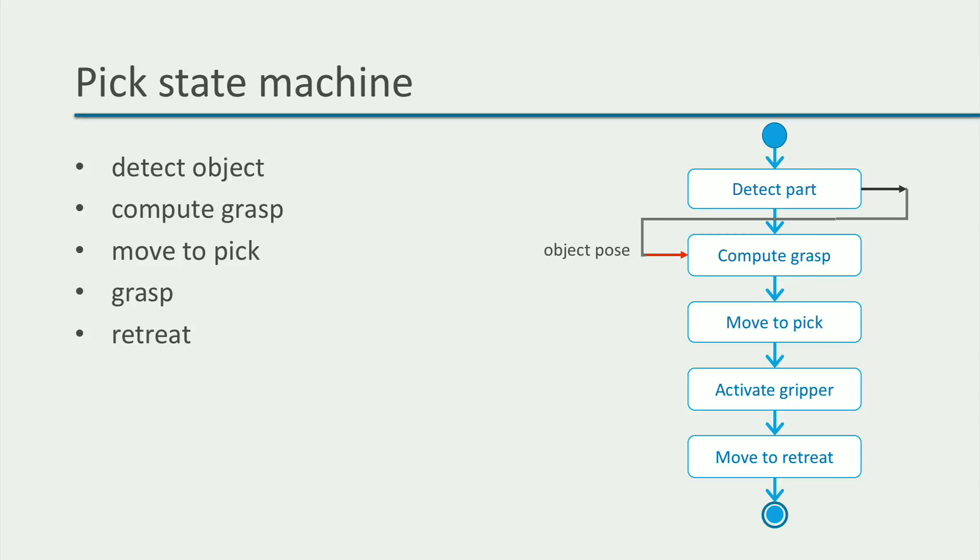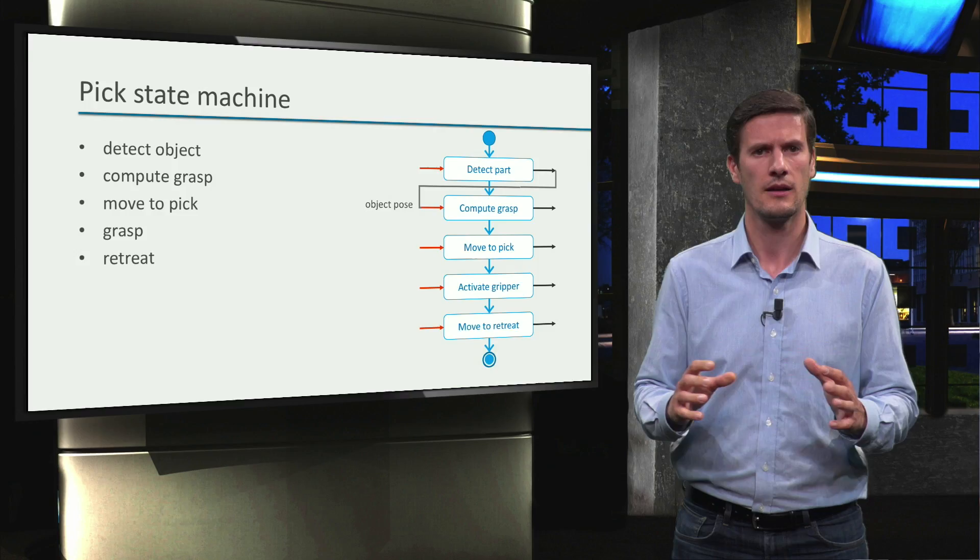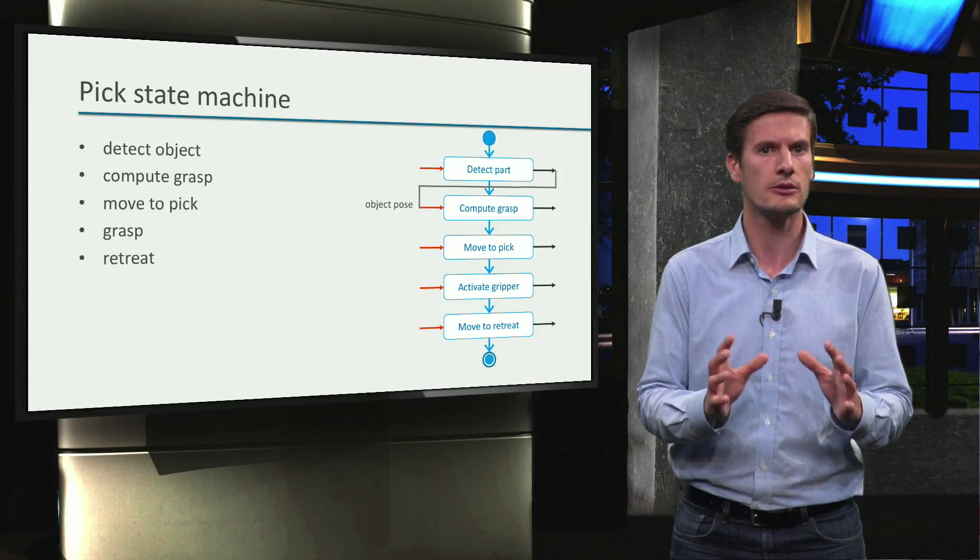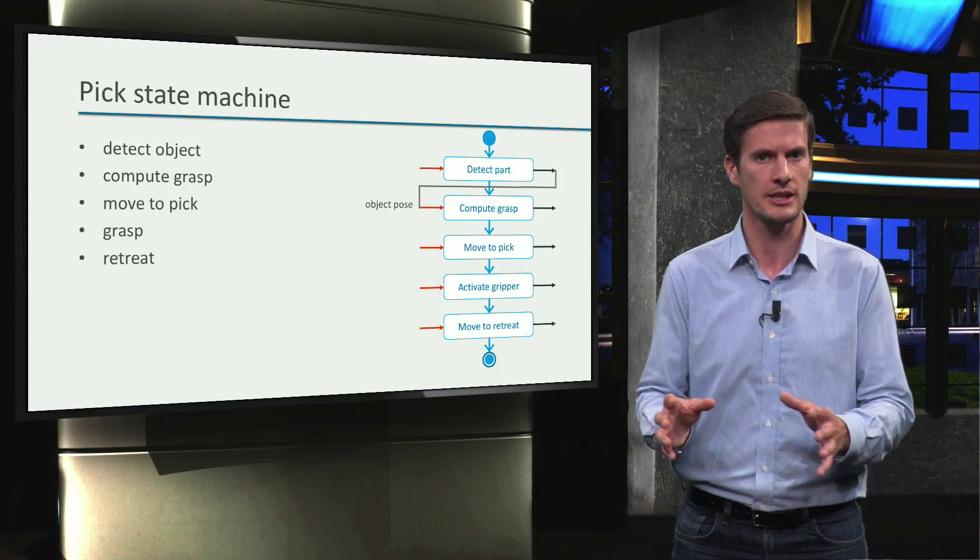To complete the behavior definition, we have to specify values for all the input and output data of the states. However, this detailed configuration of a behavior depends on the particular tool we use to create our robot state machine.